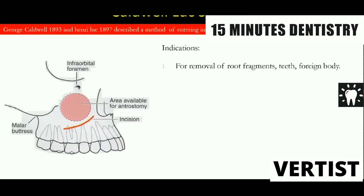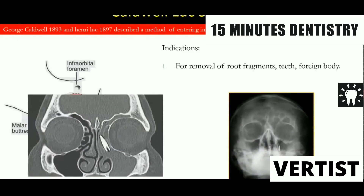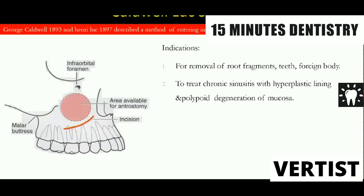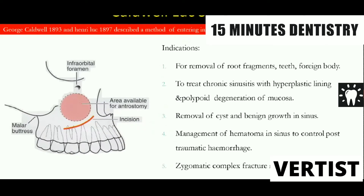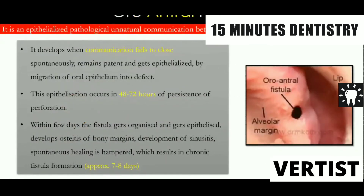What are the indications for Caldwell-Luc surgery? Root fragments and teeth pushed into the maxillary sinus during normal extraction; any foreign body — tooth or implant displaced during sinus procedures; chronic maxillary sinusitis treatment — to remove infected sinus lining; removal of cysts and tumors arising from the maxillary sinus; management of hematoma in the maxillary sinus; zygomatic complex fracture where a maxillary sinus balloon is used; and oro-antral fistula in cases of chronic sinusitis.